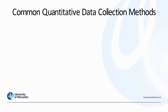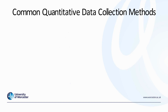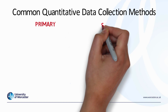There are numerous common data collection methods for collecting quantitative data. These involve both primary data collected by the researcher and secondary data sets collected by someone else. When it comes to primary data, the most common method — particularly for masters level research — is the use of a questionnaire.